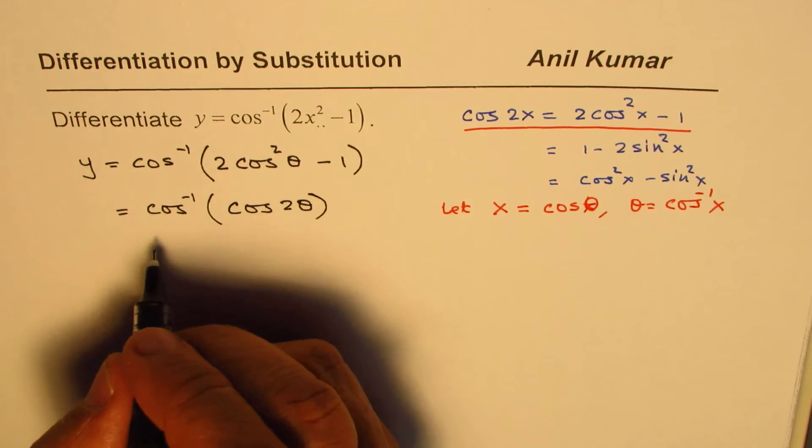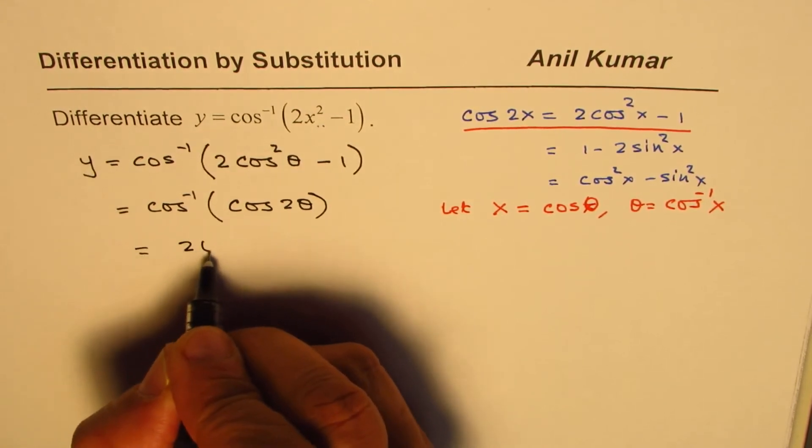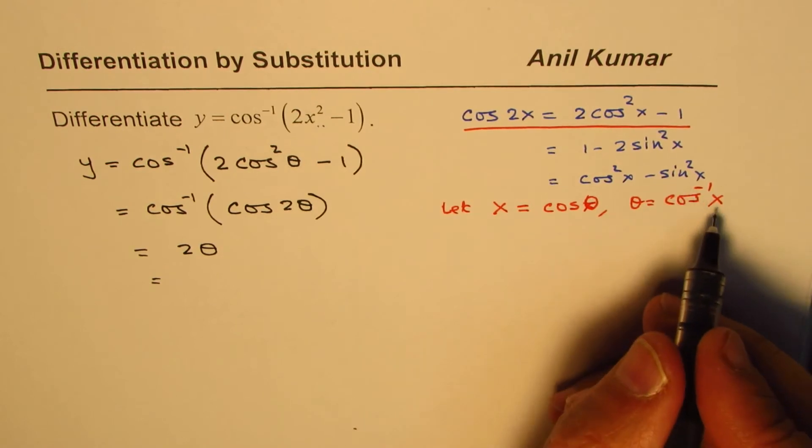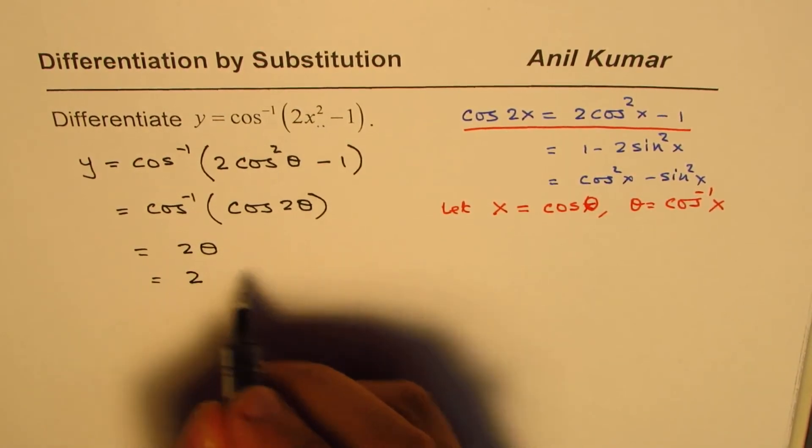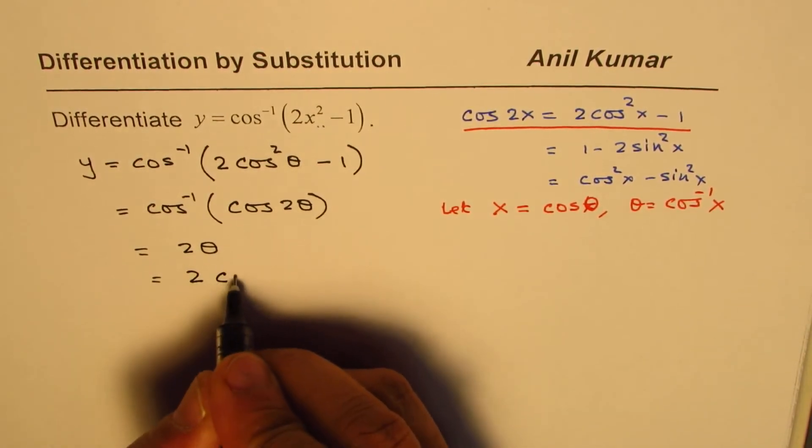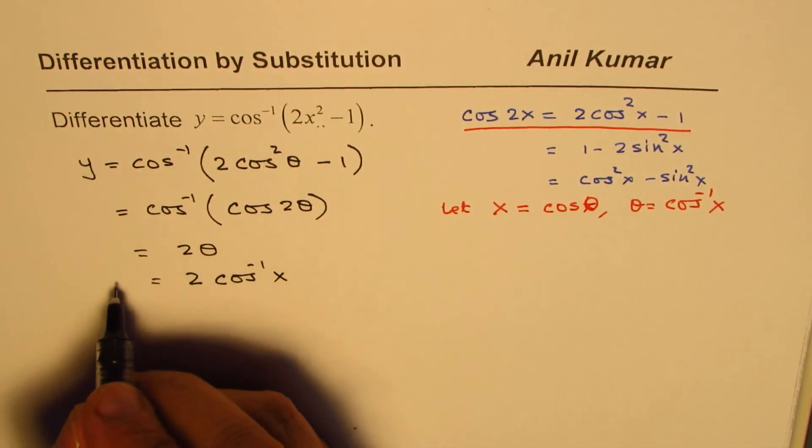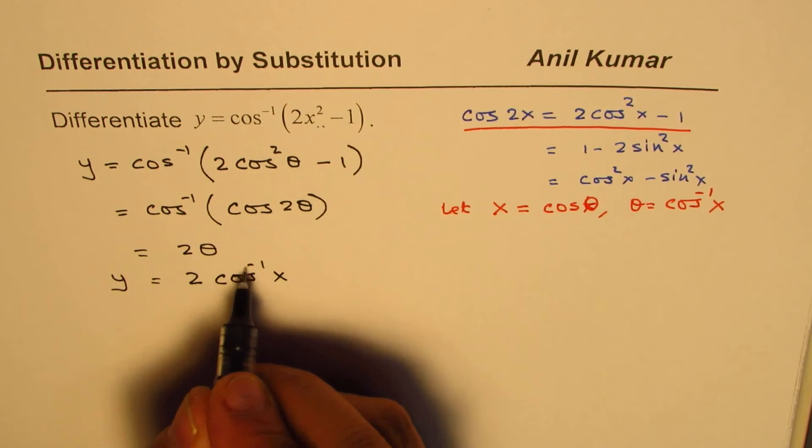Cos inverse of cos 2 theta is 2 theta, and we know theta is cos inverse of x. So we could rewrite this as a function of x, which is cos inverse of x. So we have y equals 2 cos inverse x.